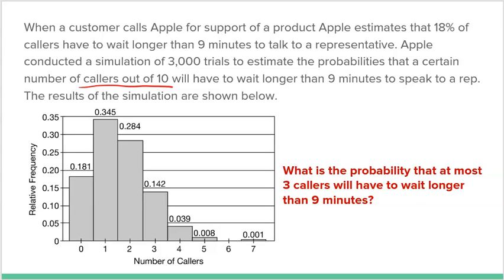What they were looking at in this problem is how many callers out of 10 will have to wait longer than nine minutes. If you have 10 callers, all 10 could wait longer than nine minutes, or nine, eight, seven, six, five, four, three, two, one, or all the way down to none of the customers waiting longer than nine minutes.